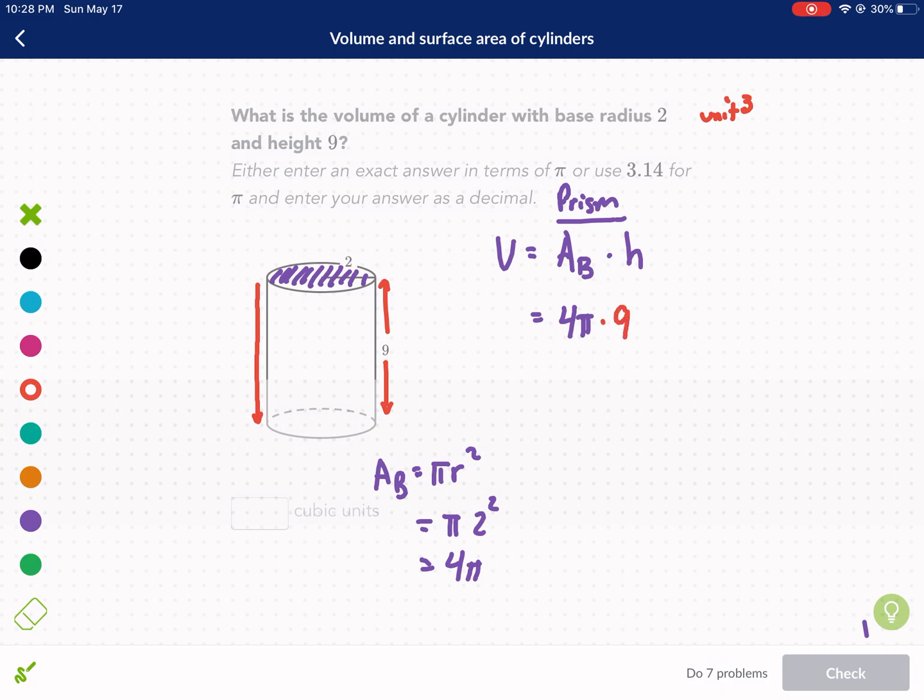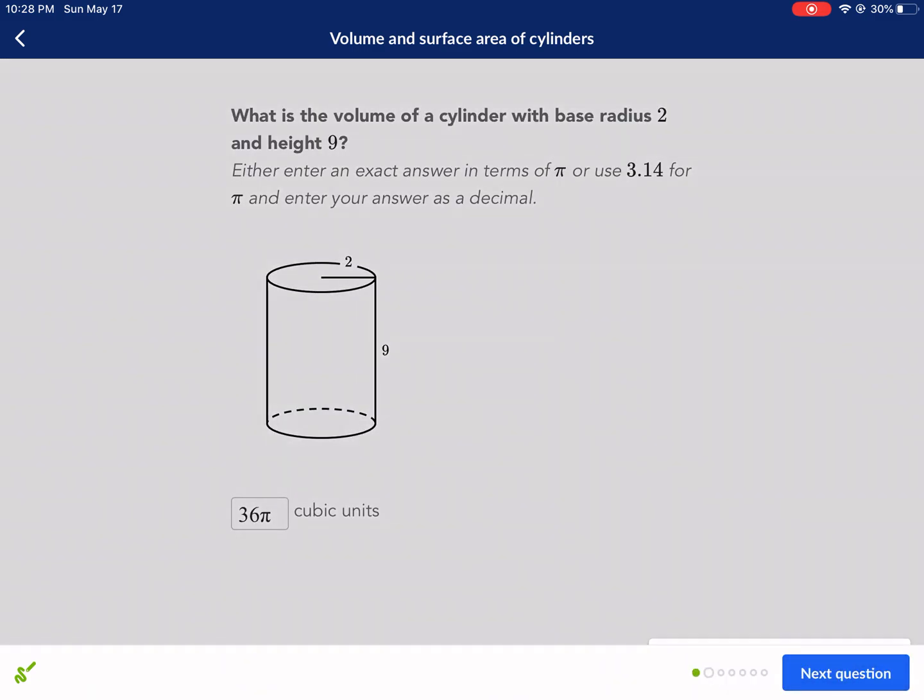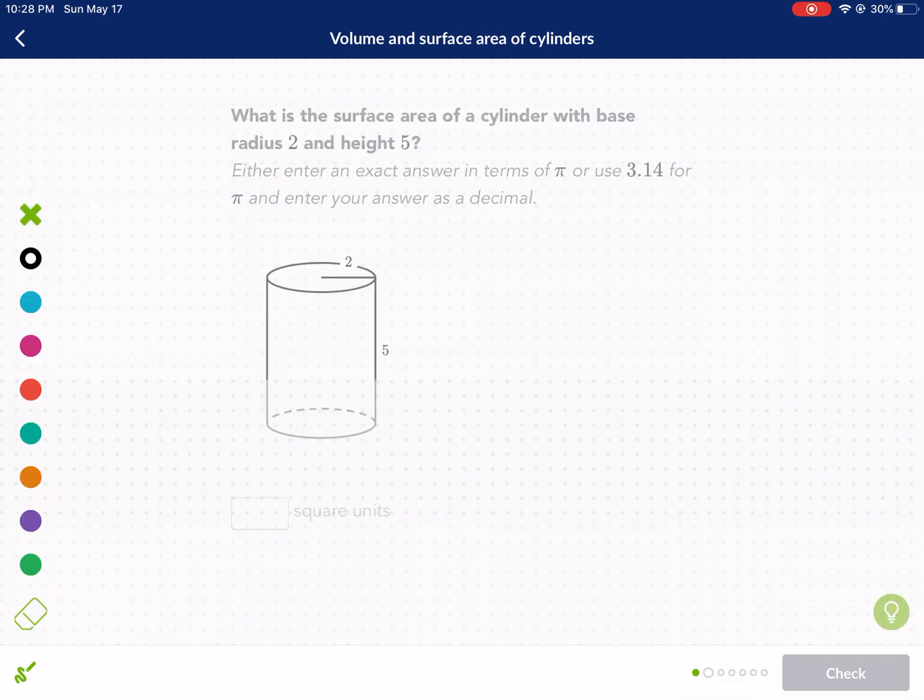I think it says exact answer in terms of π, so that's what we're going to do. For the first one, we got the area of the base is 4π. Now we're just plugging in our height, which is 9, so we get 36π. Next question.